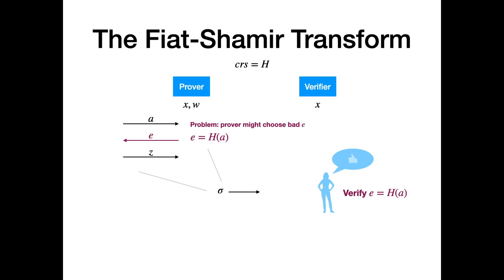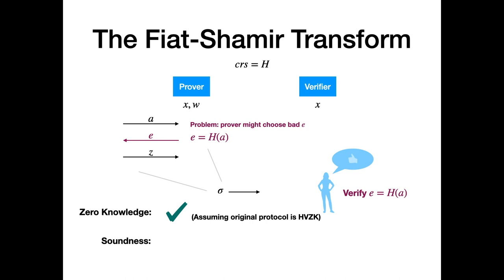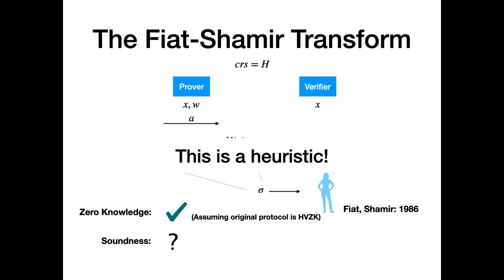It's fairly straightforward to show that if the underlying protocol has zero-knowledge properties, then the non-interactive protocol also satisfies zero-knowledge. But soundness is more tricky — we need to rely on some property of the hash function. The intuition is that hash functions are supposed to be unpredictable, but it's not clear whether classical properties like collision resistance are useful here. This technique of using a hash function to compress rounds was introduced by Fiat and Shamir in 1986, originally without a security proof, presented as a heuristic. Since then, it has remained largely open whether security proofs for Fiat-Shamir-based constructions are possible in any realistic model.